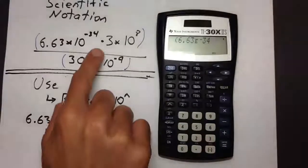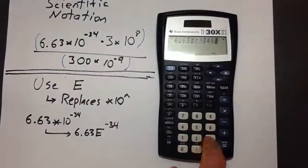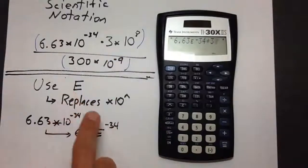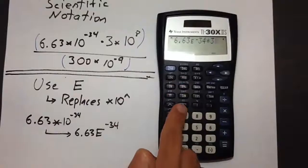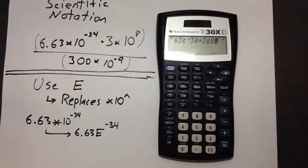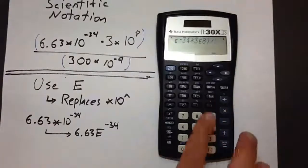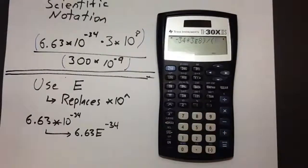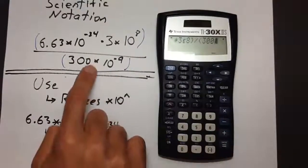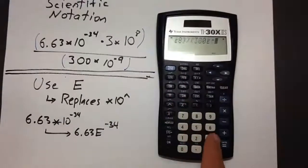Now move on to the next number. Press times, then for 3 times 10 to the 8th — since this is scientific notation — press 2nd, uppercase E, then 8. The numerator is taken care of. Close the parentheses, press division, open a new set of parentheses for the denominator. For 300 times 10 to the negative 9, enter 300, then press 2nd, uppercase E, negative 9. Close the parentheses and press enter.